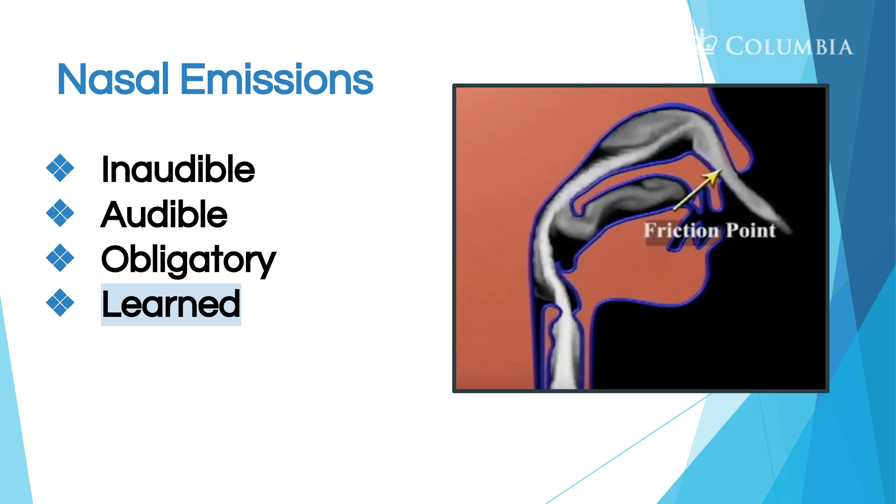A nasal emission can also be learned — this may be because they've had a cleft palate, a fistula, or poor velopharyngeal closure, and then it's been repaired, but they've learned to make sounds through their nose instead of their mouth. These are errors that you can work on in therapy.